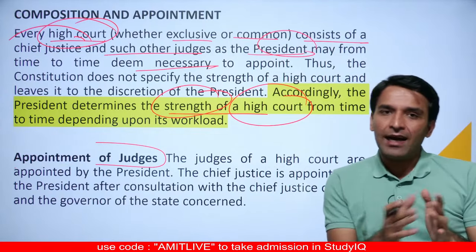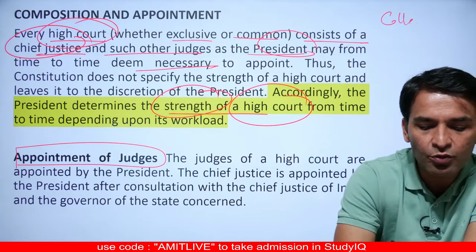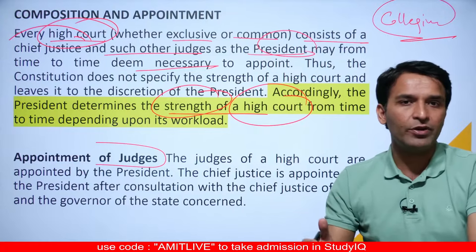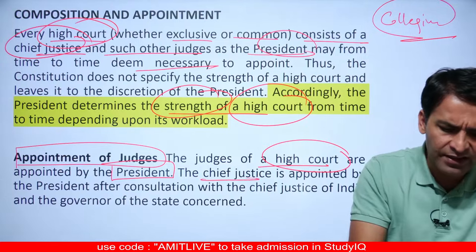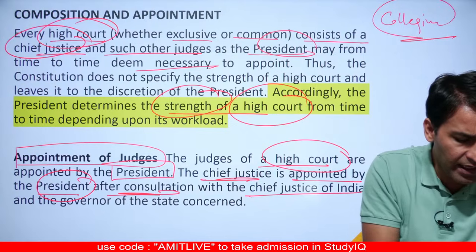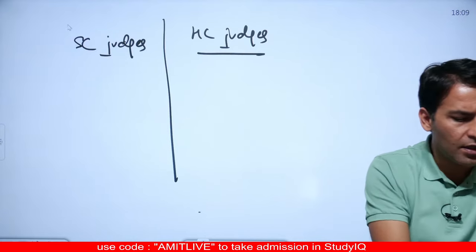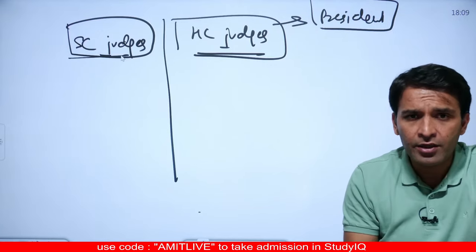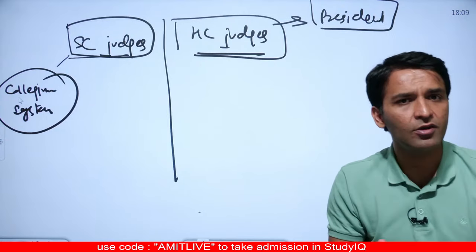Appointment of High Court judges is similar to that of Supreme Court judges — technically done by the Collegium system. Constitutionally, the President appoints both Supreme Court and High Court judges. The Chief Justice of a High Court is appointed by the President after consultation with the Chief Justice of India and the Governor of the concerned state. The Collegium's recommendation is constitutionally binding on the President, which was established through landmark Supreme Court judgments.